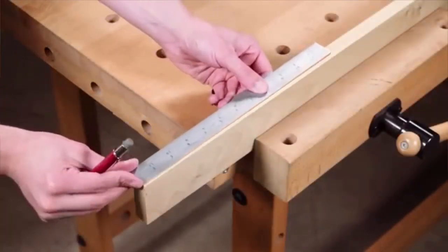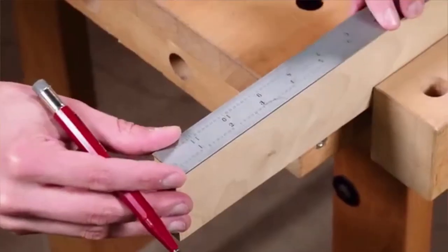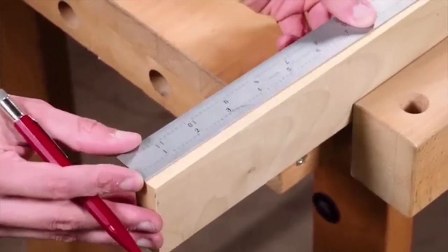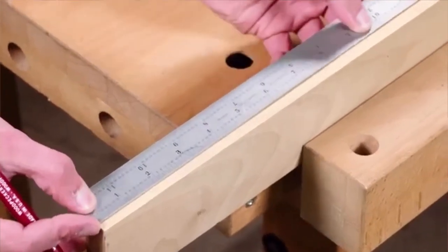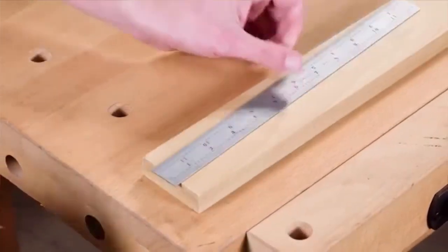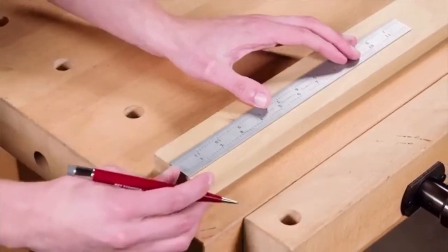Layout work on the narrow edge of stock is awkward with most woodworking rules. The rule must align with the face of your stock, but it's wider than the edge you're trying to measure, preventing you from marking without breaking alignment. And you can still struggle to keep the rule parallel to the edge while working on the face of a workpiece.